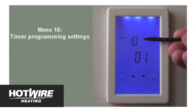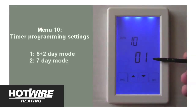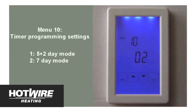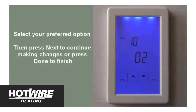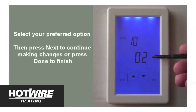Menu 10 is related to programming the timer and allows you to select between two programming options. Option 1 is called 5 plus 2 day mode, which will allow you to program the unit's switch on and switch off times just once, and they will be applied from Monday to Friday, with separate times to be programmed for Saturday and Sunday. Option 2 is called 7 day mode, which will allow you to set the switch on and switch off times for just one day, and they will be applied across the entire week from Monday right through to Sunday. In this case, we will use option 2, which means we will be given the option to set the switch on and switch off times for one day, and all other days of the week will use these exact same times.